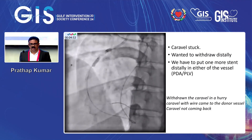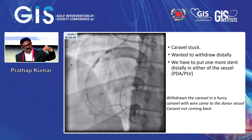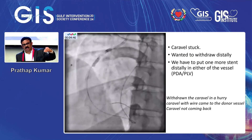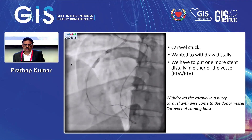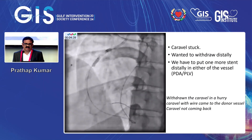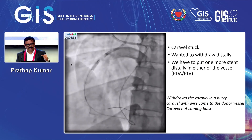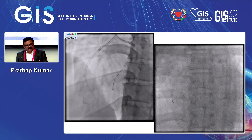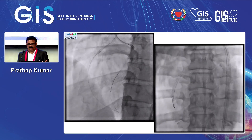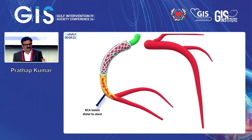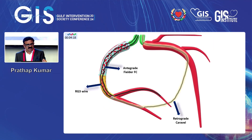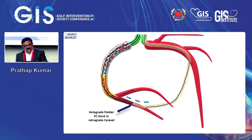When we wanted to stent the PLV, we decided to take another wire. The wire went but the Caraville got stuck. The Caraville was withdrawn and went back inside. We wanted to withdraw the wire distally and put one more wire in the stent distally in either the PDA or PLV. The Caraville was withdrawn in a hurry — the anti-grade wire came out. My Caraville wire with the filter FC anti-grade with the piece came out. The Caraville with the filter FC wire anti-grade were stuck together, probably stuck in the stent strut distally.